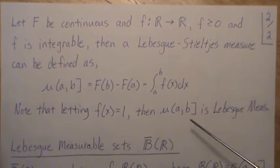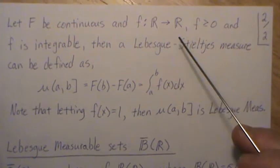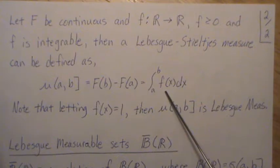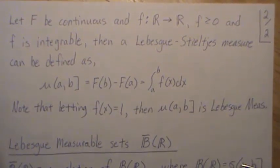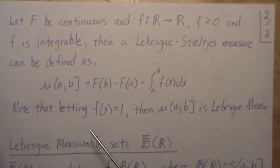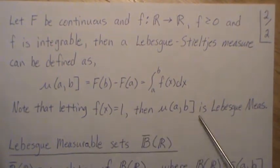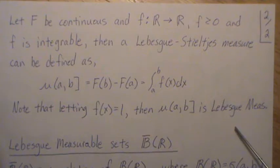Now we can generate a whole slew of new measures by choosing a different function from the reals, greater than or equal to zero, that's integrable. Maybe we put the normal distribution here, or the chi-square distribution, or the beta distribution—we can generate new measures, and they're all Lebesgue-Stieltjes measures. Note that if we let f(x) = 1, then μ(a,b] is Lebesgue measure. So Lebesgue measure is a specific case of Lebesgue-Stieltjes measure.